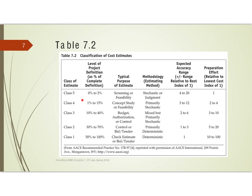As you put in more and more work, they go from class 5 to class 1, which is where you're ready to go to bid. You're putting in more and more work, and your accuracy as a ratio relative to the actual cost is going to decrease.